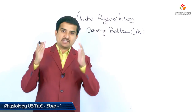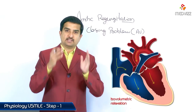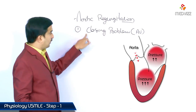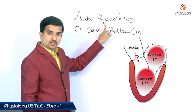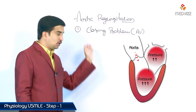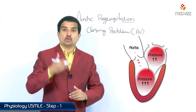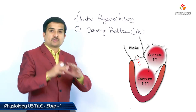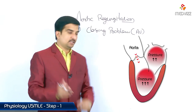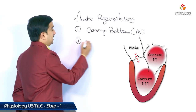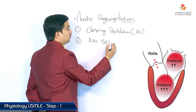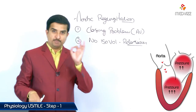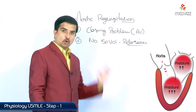Isovolumetric relaxation is the relaxation of the ventricles without a change in volume. However, because of the regurgitation, there is a backflow of blood from the aorta to the ventricle, which increases the ventricular volume. This increasing volume means there is no isovolumetric relaxation in aortic regurgitation.